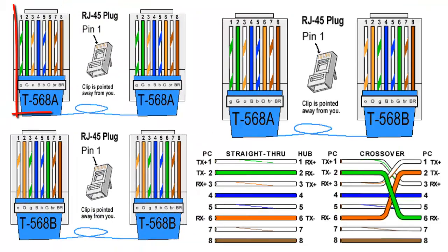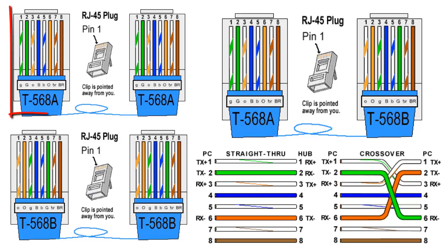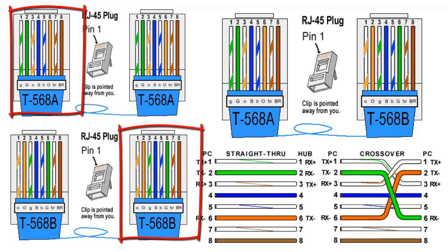I'm going to show you pictures on screen now of the difference between the color codes and what they mean. What you're currently looking at is the different layouts for ethernet cables. The first one is the A standard, which has its own unique layout. The B standard replaced the A standard — the A was ratified in 1995 and replaced by the B standard in 2001-2002.